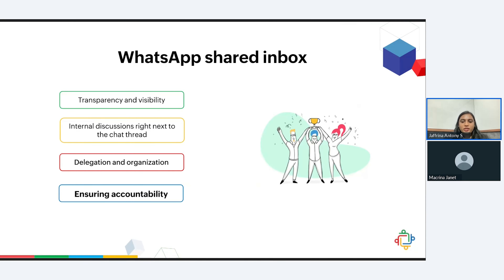And the last point will be accountability. When multiple people handle multiple conversations, it's very important to know precisely who made a specific reply, and that's exactly what a shared inbox will help you with. Our activity timeline will give you all the details on every activity that is happening in a thread, such as who did what and when. With this, you will be able to identify and track the messages very easily.